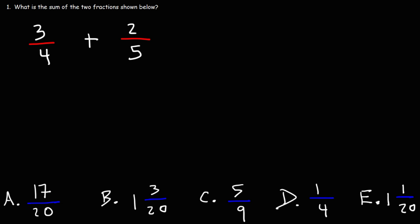To add two fractions, the denominators of those two fractions must be the same. Right now they're different, so we'll need to make them the same. So the least common multiple, or LCM, of 4 and 5 is 20.